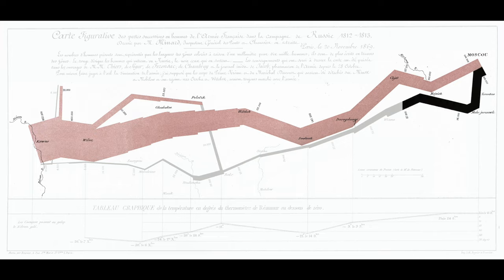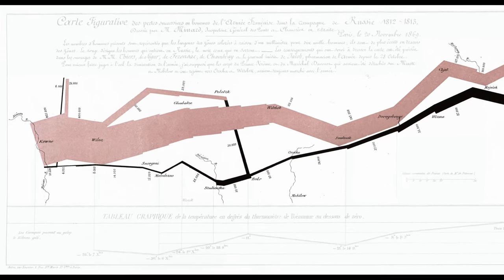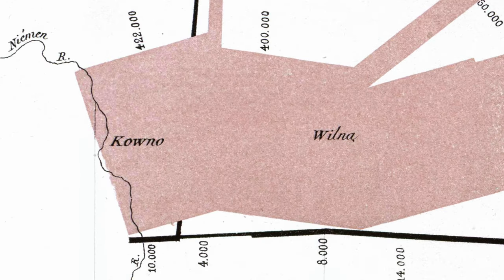The ribbon then goes back from Moscow, and it changes color from tan to black. Again, the width is the number of men, starting with the 100,000 in Moscow, getting narrower and narrower, and eventually dropping down to only 10,000 who made it out. Remember, we started with 422,000, so this means that out of every 42 men in Napoleon's army, only one came back.